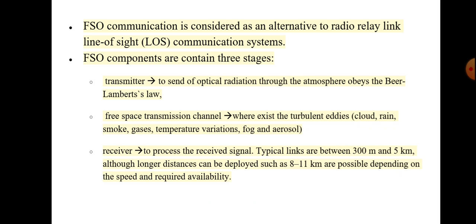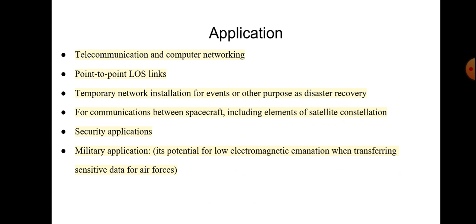Even when utilizing such channels, there is a risk of the presence of cloud, rain, smoke, gases, temperature variations, fog, and aerosol, and we have to consider all these factors in the reception process. At the receiver side, the received signal is processed. Typical links are between 300 meters to 5 kilometers in length, although longer distances of 8 to 11 kilometers are possible depending on speed and required availability.